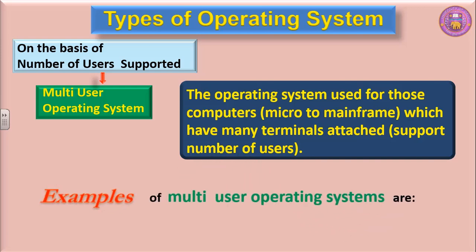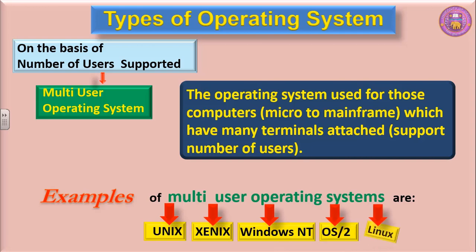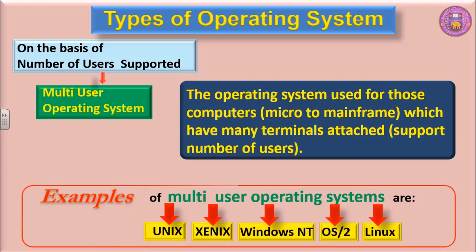Examples of multi-user operating systems are Unix, Xenix, Windows NT, OS2, and Linux. All these are examples of multi-user operating systems.